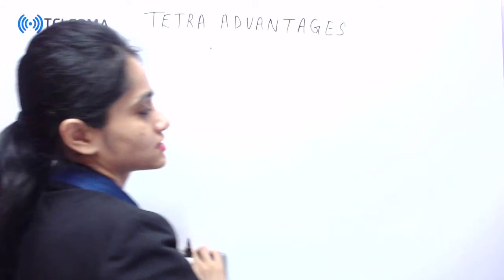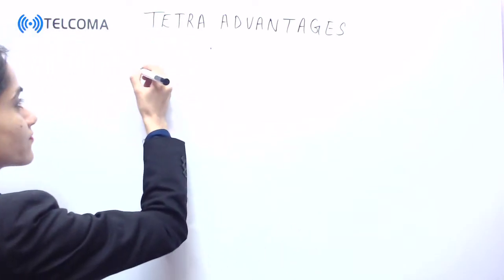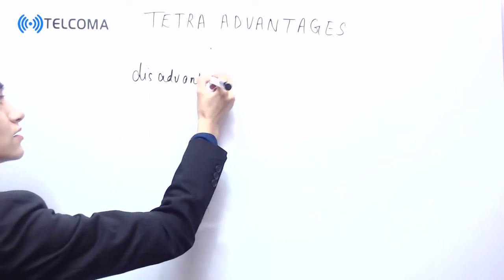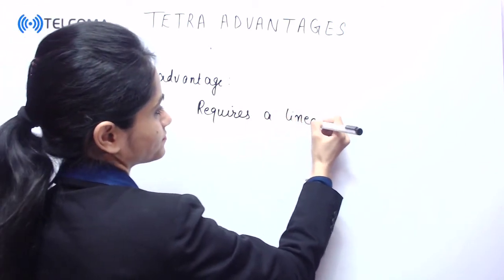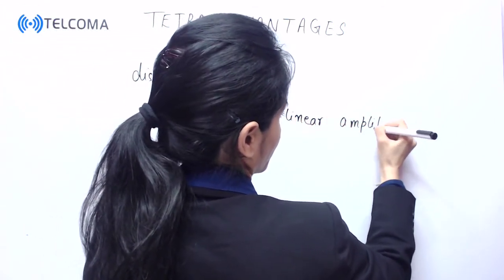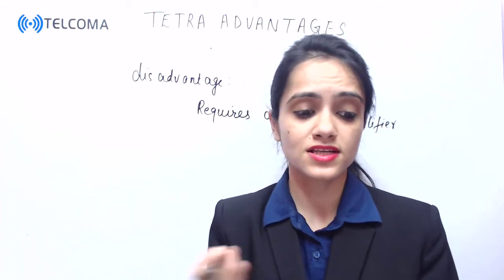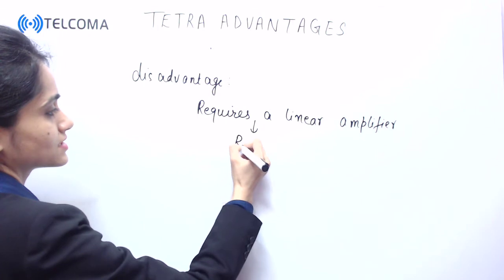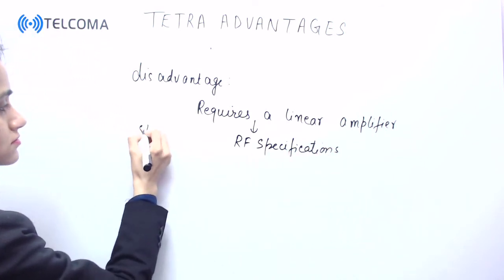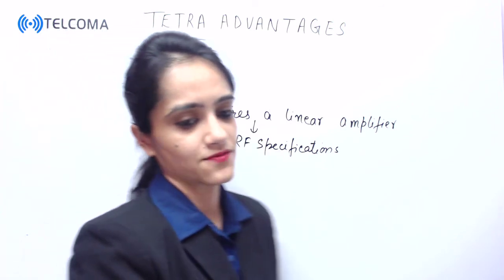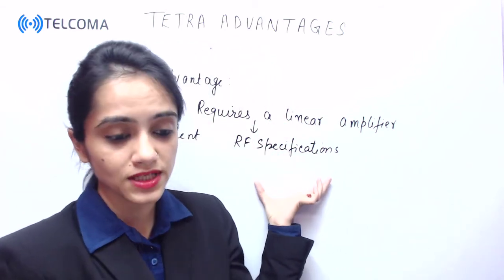Now talking about the disadvantages of TETRA technology: it requires a linear amplifier. It requires a linear amplifier so that it can meet stringent RF specifications, which allow it to coexist alongside other radio services. That is why a linear amplifier is required.